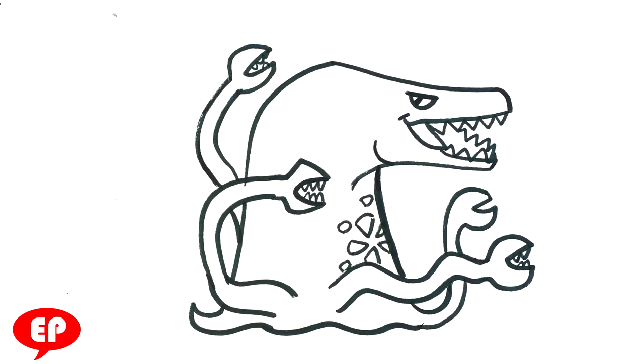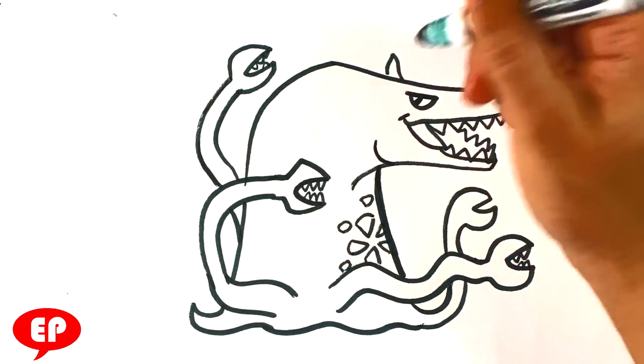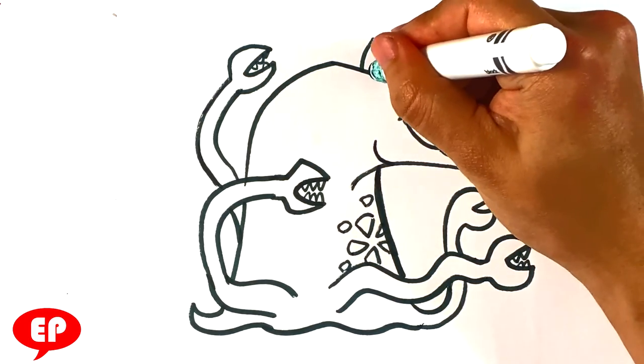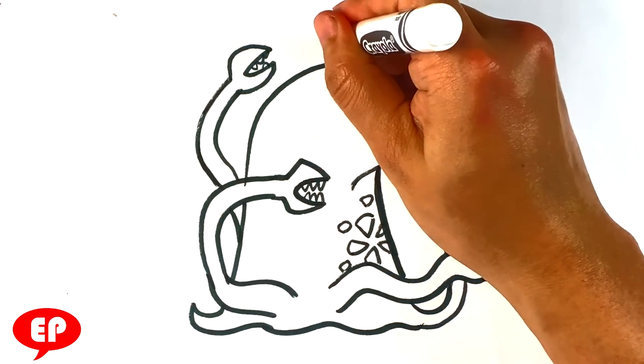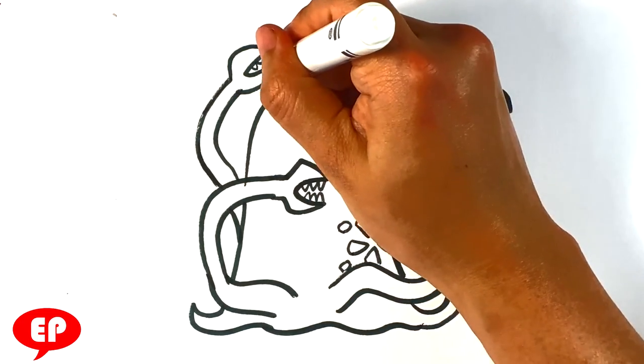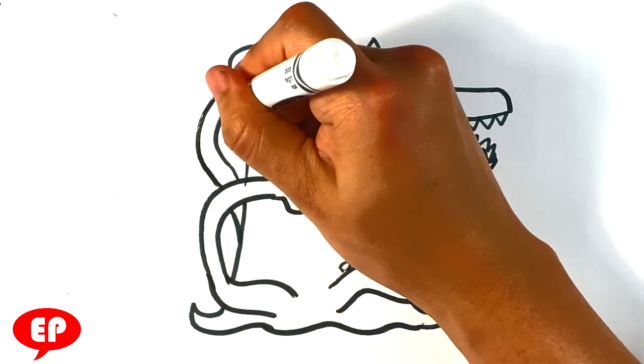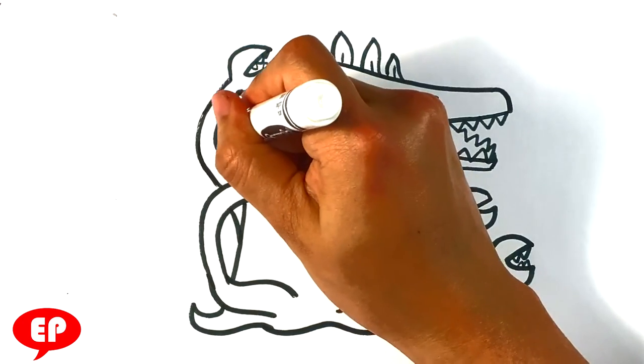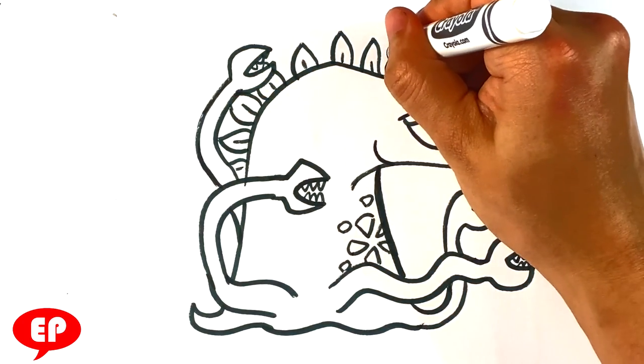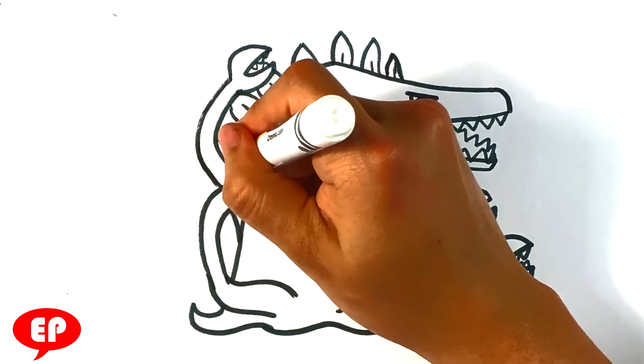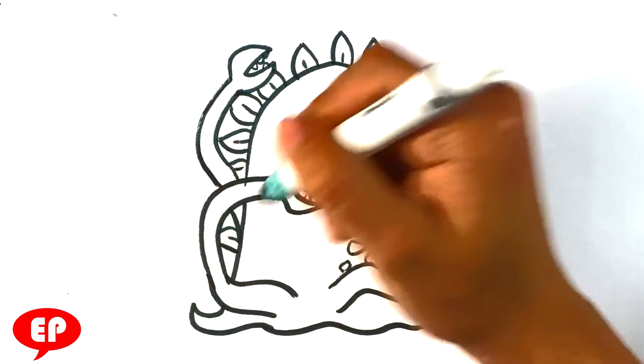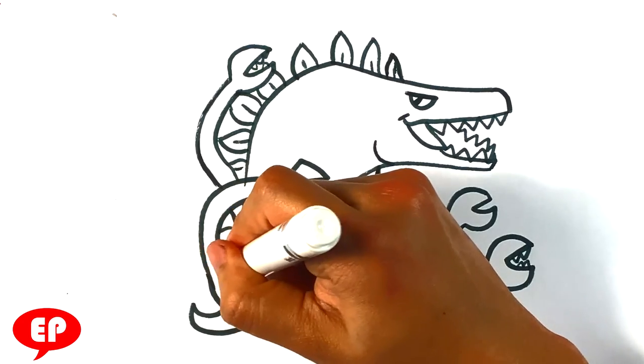He's got these spikes that kind of look plant-like. So I'm gonna, right there, draw these really simplistic shapes. And I'm gonna just draw them like they're leaves on his back. There we go. There we go. Here we are.